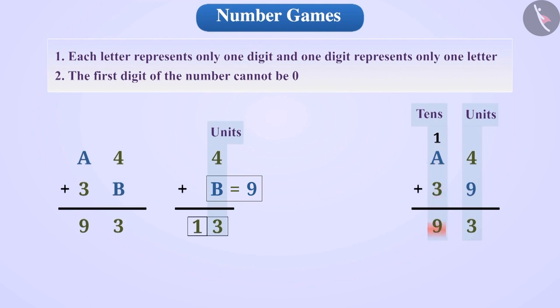Now, in the tens place, we see that A plus 3 plus 1 is equal to 9. That is, if A plus 4 is equal to 9, then what will A be? Think for a while. Exactly. A would be equal to 5.